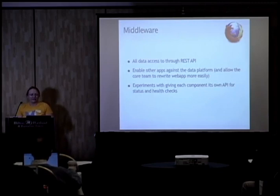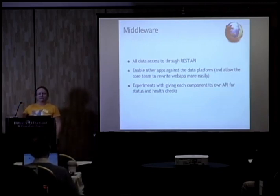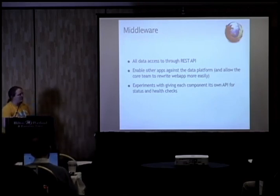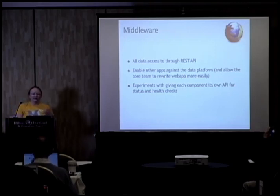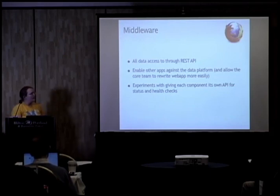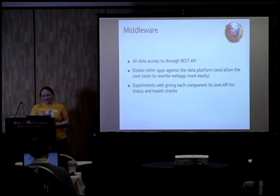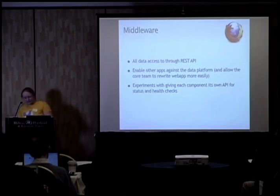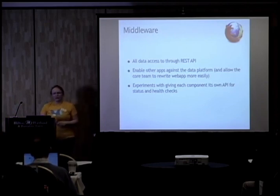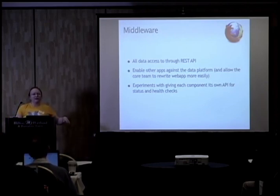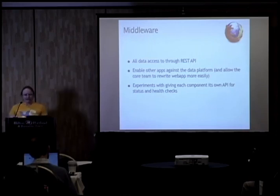We put all data access through a RESTian API to enable people to build other apps against our data platform, and also so we could rewrite the web app with minimum pain. Moving all data access into this API meant the web app rewrite only took about three and a half months. We've also experimented with giving each long-running daemon component — collectors, crash movers, processors — its own API endpoint so you can ping it and ask what job it's working on, its last action, timing, and general health. We don't have that in production right now, but I'd like to put it back.